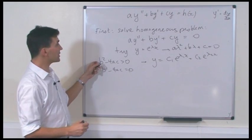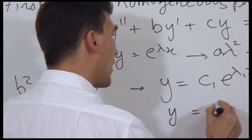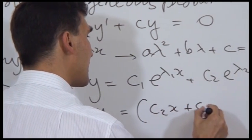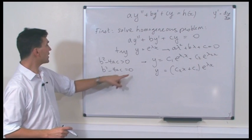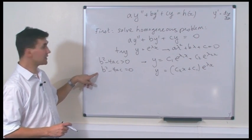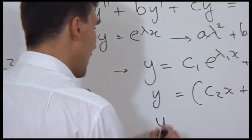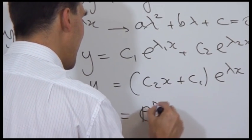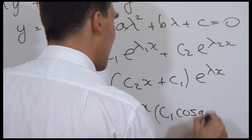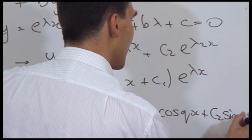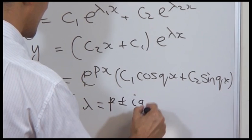In the case where B squared minus 4AC equals 0, we have a repeated real root lambda, and the solution is Y equals (C2 X plus C1) times E to the lambda X. The third case is when B squared minus 4AC is negative, in which case you get Y equals E to the PX times (C1 cosine QX plus C2 sine QX), where the roots are lambda equals P plus or minus iQ.